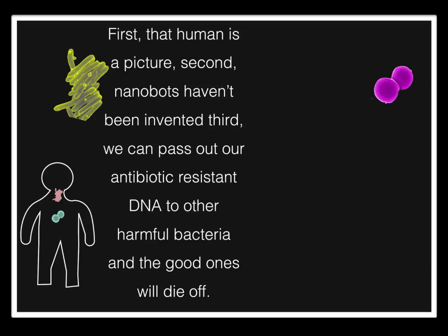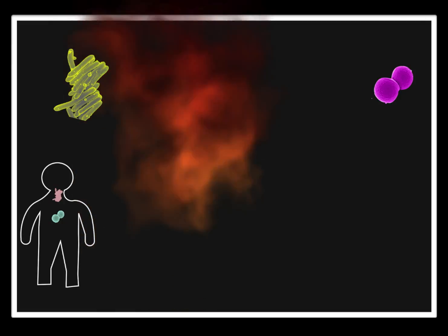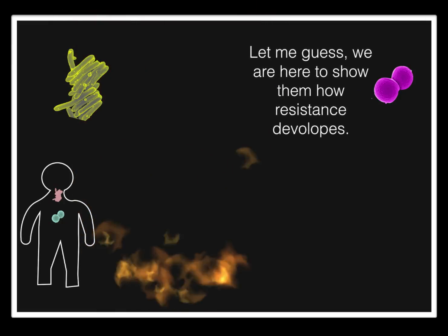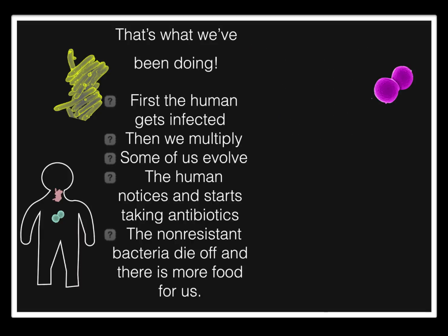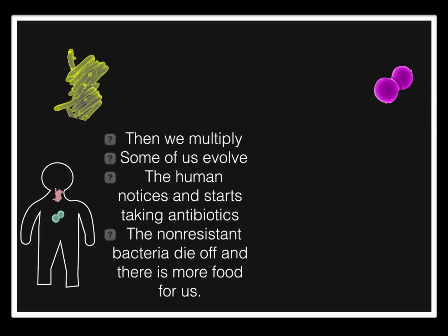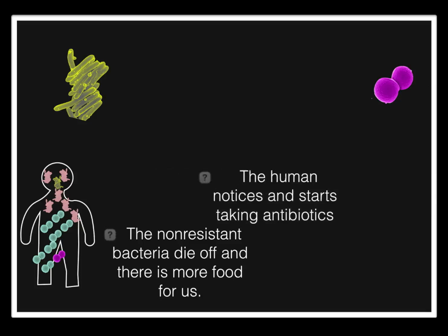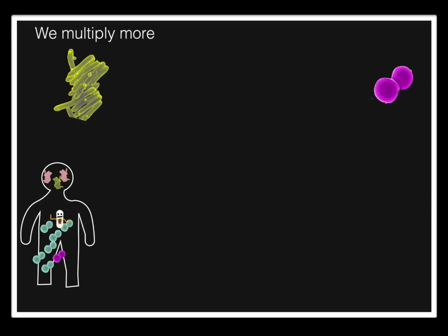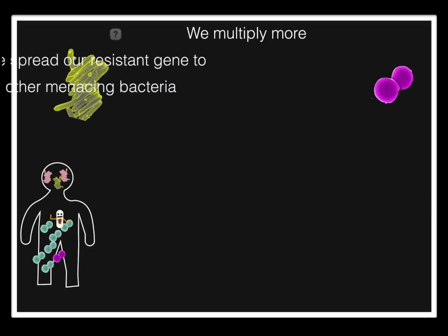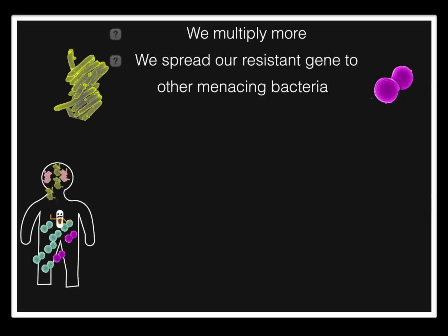First, the human is a picture. Second, nanobots haven't been invented. Third, we can pass our resistance gene to other menacing bacteria. We're here to show them how resistance develops. First, the human gets infected. Then we multiply. Some of us evolve. The human notices and starts taking antibiotics. The non-resistant bacteria die off, and there's more food for us. We multiply more, and we spread a resistant gene to other menacing bacteria.